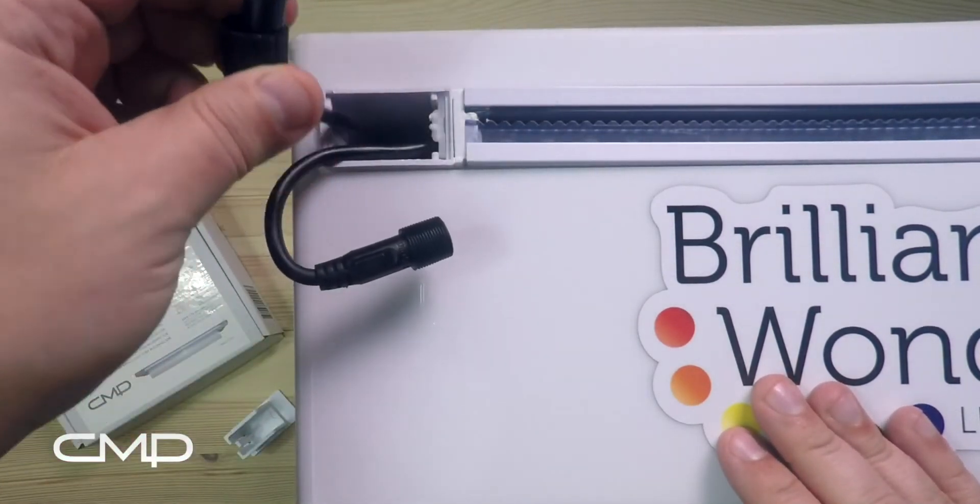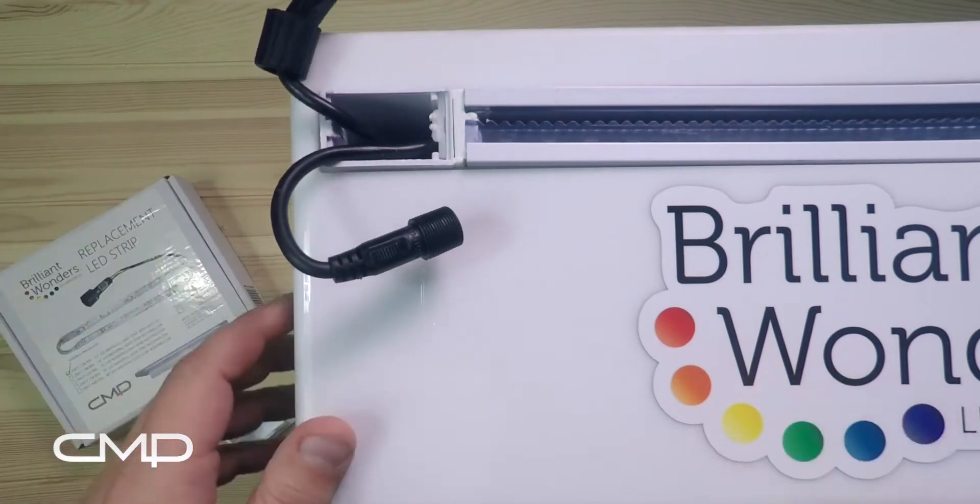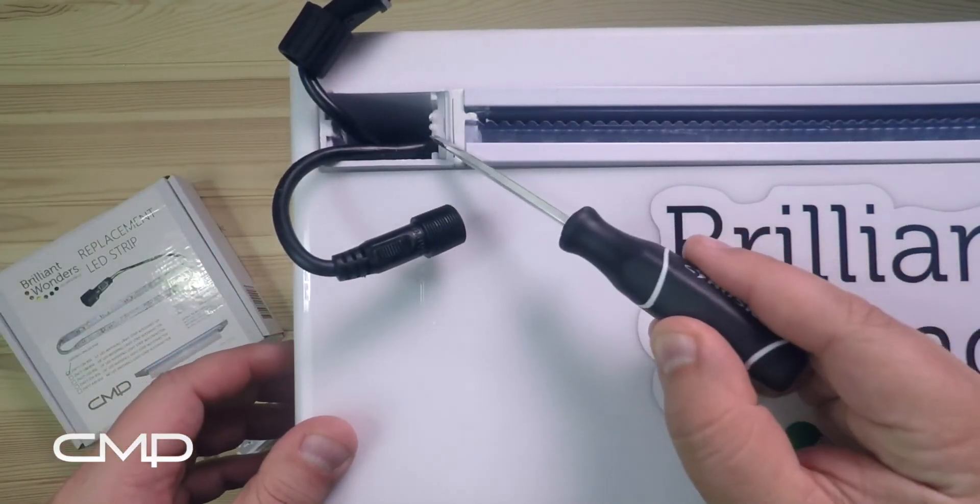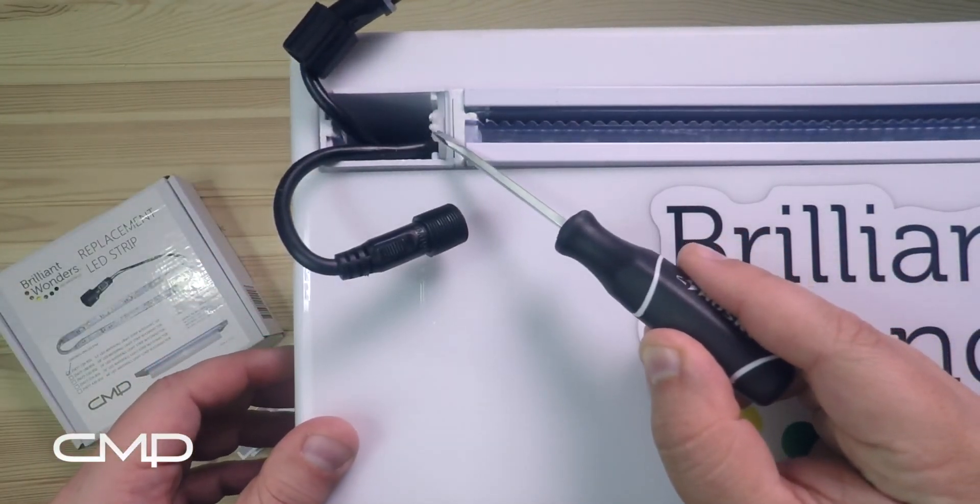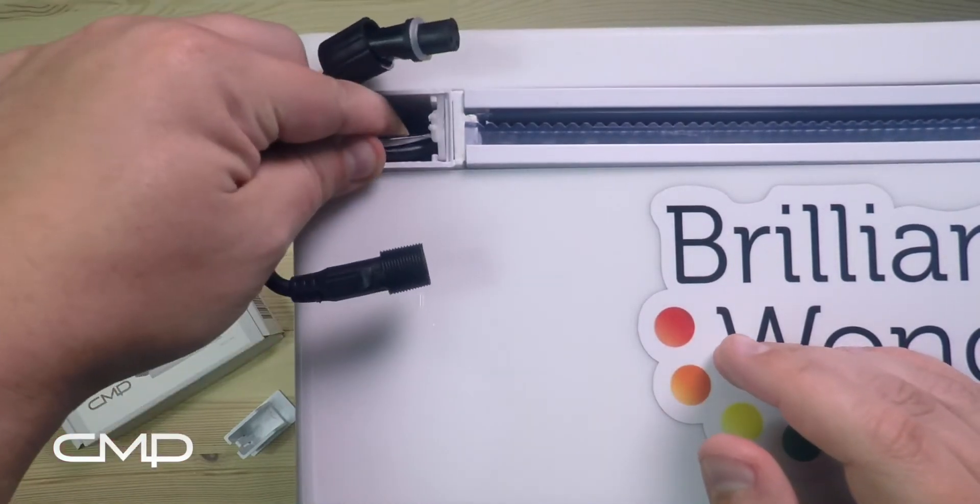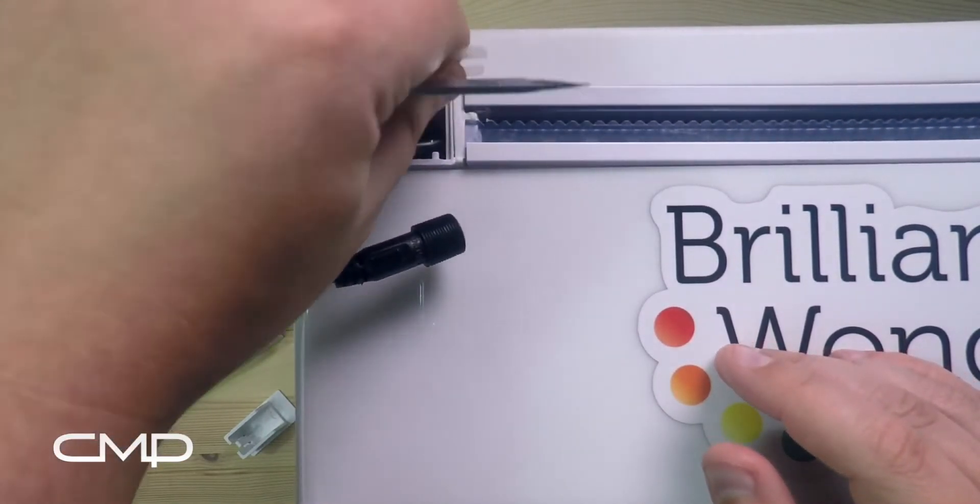So we don't need this end right now, I'm gonna scoot it out of the way. There is a little locking tab here for the strip. Just use your screwdriver again and kind of get in there and pop it loose.